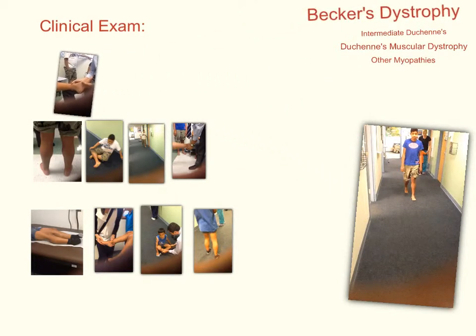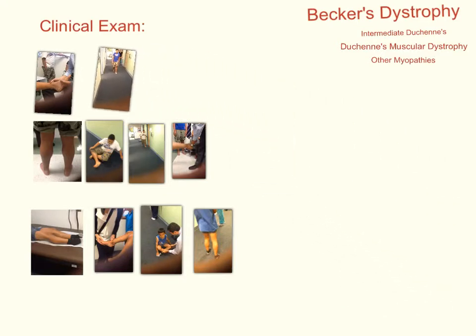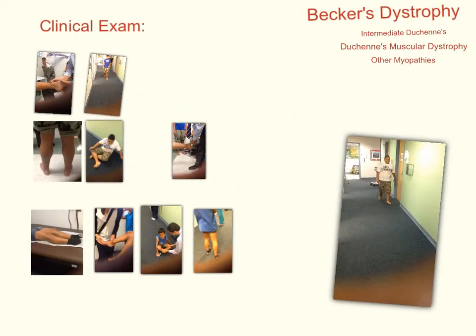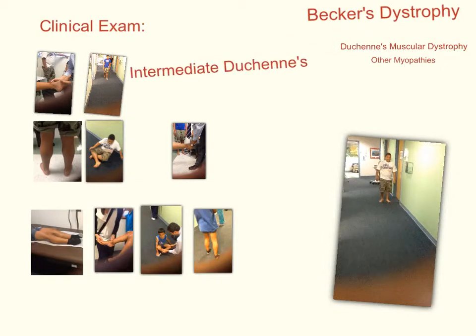Intermediate form muscular dystrophy is where the muscle weakness is not as severe as Duchenne's, and loss of ambulation typically occurs between 12 and 15. Notice the waddling gait that this 11-year-old patient exhibits.